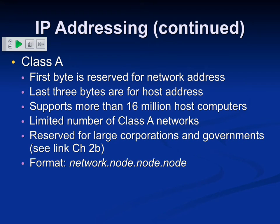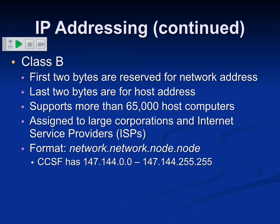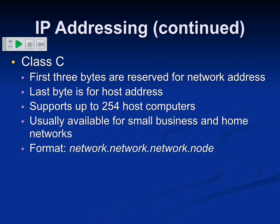In Class A, the first byte of the four bytes tells you the network and all the rest are node bytes. Class B is where the first two bytes are network bytes and the last two are node bytes - that's City College, which is old enough to have gotten a Class B address early on. Our Class B address is worth about a million dollars on the open market because IPv4 addresses were all distributed around 2012 and go for about eleven dollars each. Class C is the smallest - the first three bytes determine the network, so you can only have 254 devices with separate public addresses.